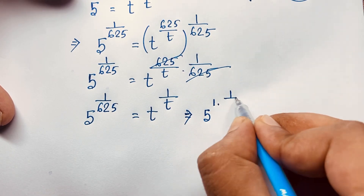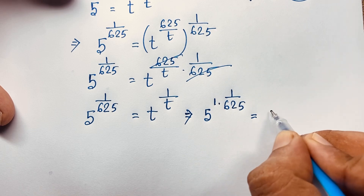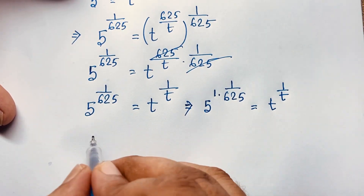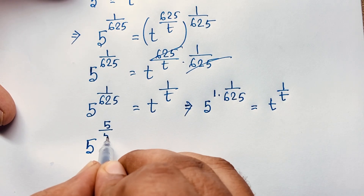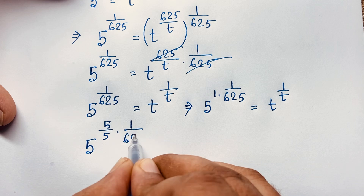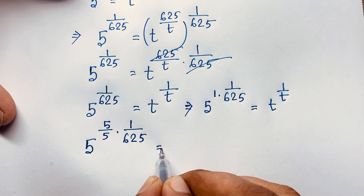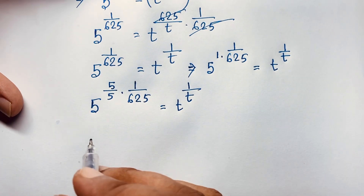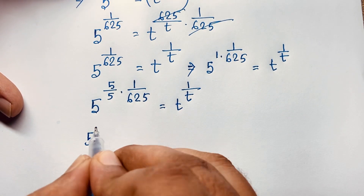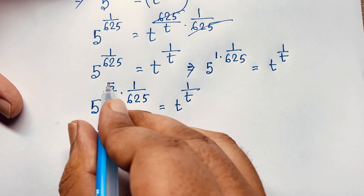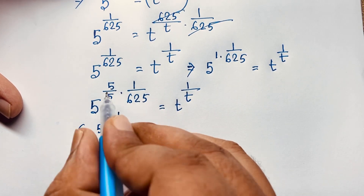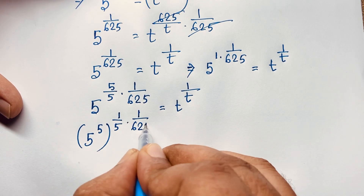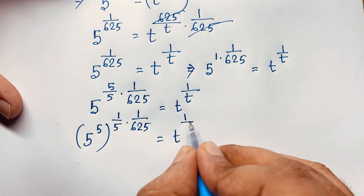So 5 to the power 1 over 625 is equal to t to the power 1 over t. I rewrite the exponent as 5 over 5 times 1 over 625, which gives 5 to the power 5, bracket whole to the power 1 over 5. Taking this factor of 5 out, the denominator becomes 1 over 5 times 625, which equals 1 over 3125. So this gives t to the power 1 over t.